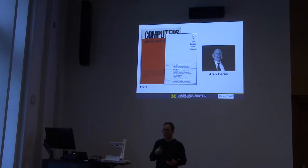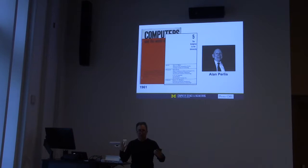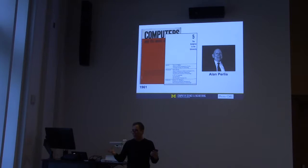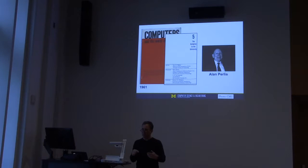Perlis made his argument as a contrast with calculus. We think calculus is part of a general education, but he said calculus is the study of rates while computer science is the study of process, and everybody cares about process. The computer gives us automated execution of process, and that changes the way you think about your world. For example, the business department at Carnegie Tech was starting to run economic simulations — before this, economics was not an experimental science, but once you can run simulations, it becomes one.